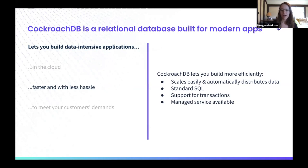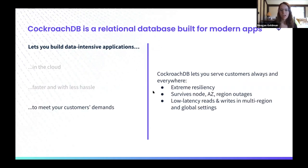The characteristics that really go into this are easy scale that automatically distributes data horizontally across the cluster, standard SQL — developer-friendly SQL like what you'd expect from Postgres — and support for transactions. We also have a managed service available: CockroachCloud. A lot of customers find this super helpful and saves them a lot of time. CockroachDB meets the needs of what a modern customer might demand. It's extremely resilient — it can survive node, availability zone, and even region failures. In a multi-region environment, we provide low latency reads and writes even across different countries and continents.